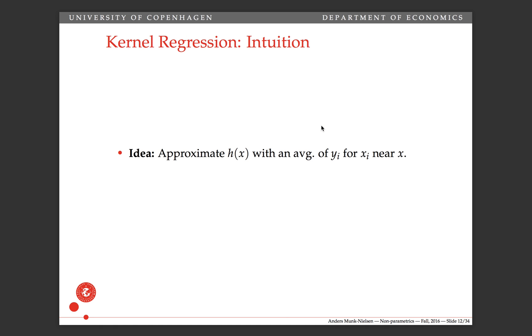So kernel regression is kind of an extension of this binned scatter plot in the same way that the kernel density estimator was an extension of the histogram. The idea is to approximate the true function, let's call it h of x, with an average of y for those observations where xi is close to x. So whenever we want to evaluate h at some x, we find the observations that are close to x, the xi for which xi is close to x, and calculate an average of y.